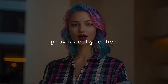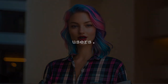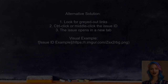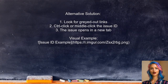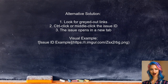Now let's look at the answers provided by other users. An alternative solution from another user suggests that the links to your Jira issues are actually there, but they might be grayed out. You can simply control-click or middle-click the issue ID on the right side, and it will open the issue in a new tab.